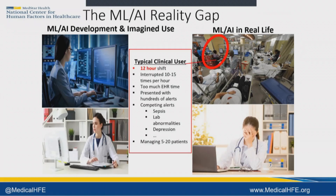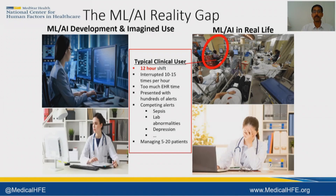If you think about this user, they might be exposed to one of these algorithms embedded in the electronic health record. But what do we actually know about that user? This particular user is on a 12-hour shift. If this is in the emergency department, they're interrupted 10 to 15 times per hour — not per shift, per hour. Way too much time on the EHR, including probably time when they even get home. They're presented with literally hundreds of alerts and oftentimes competing alerts — sepsis alerts, abnormal lab results, depression alerts. And in emergency medicine, they're probably managing between 5 and 20 patients. This person is bombarded with so much information, and now here's another alert about sepsis.